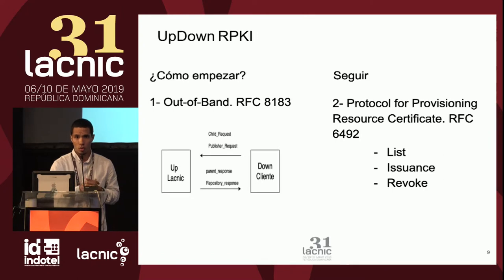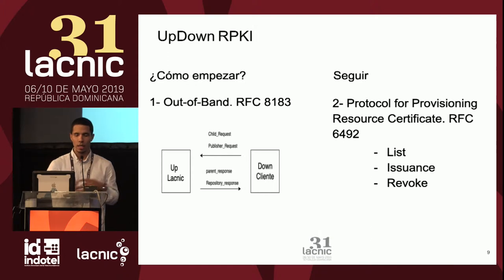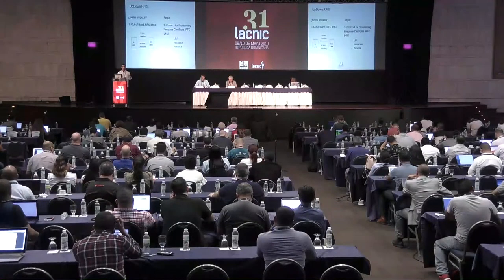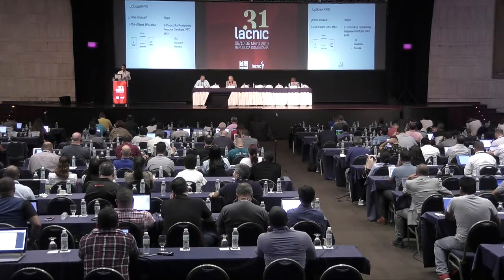¿Cómo empezar con UpDown? Lo primero es identificar ambas partes. Tenemos la parte UP que viene a ser el server — en nuestro caso la LACNIC — que contiene la CA. Y la parte DOWN del cliente que opera en este protocolo. Lo primero es que el cliente cree su clave pública y se la haga llegar al server para que lo identifique, la almacene, y a su vez le responda con su clave pública. Así, ambas partes quedan identificadas en este protocolo.